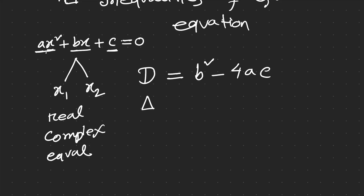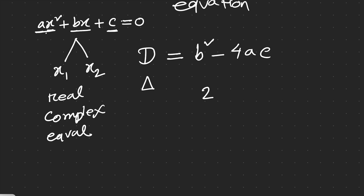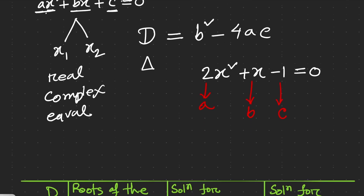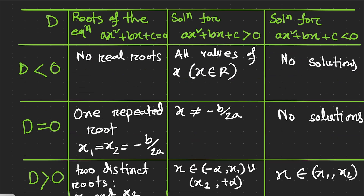The discriminant is written as D = b² − 4ac. Let's write an example equation: 2x² + x − 1 = 0. In this equation, a = 2, b = 1 (a hidden 1), and c = −1. We can easily find the discriminant for this quadratic equation.